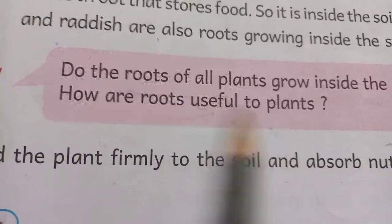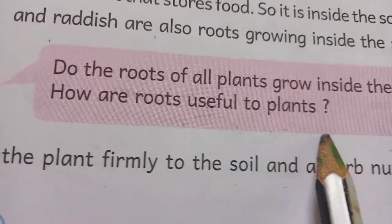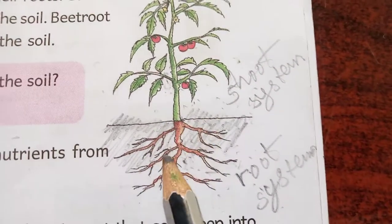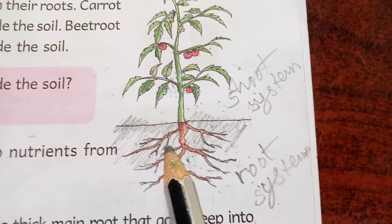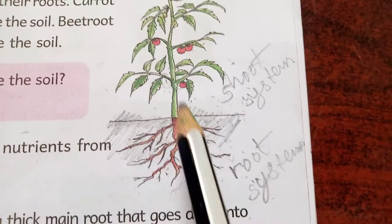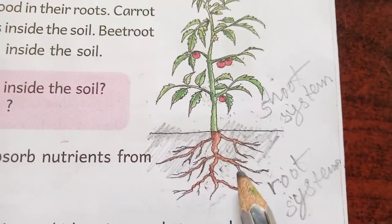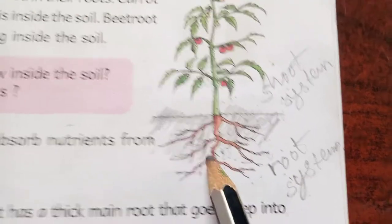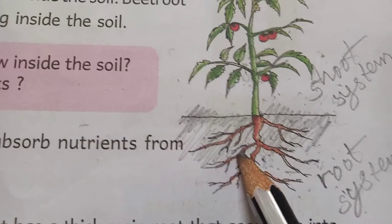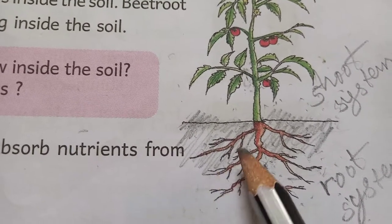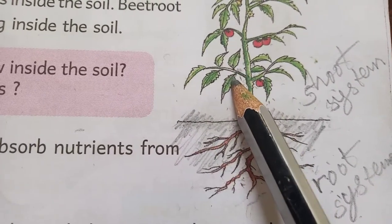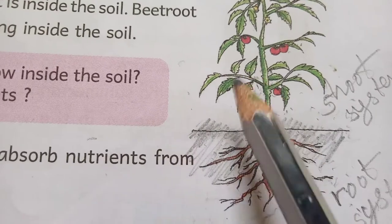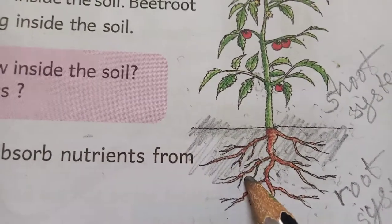How are the roots useful to plants? Roots hold the plant firmly to the soil and absorb nutrients from the soil. As the foundation gives support to a house, the roots inside the soil help the plant to stand erect. Plants absorb water and nutrients through the roots.